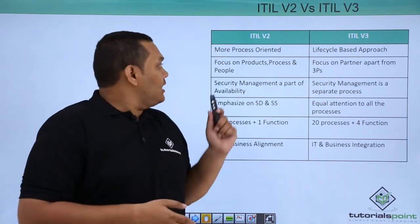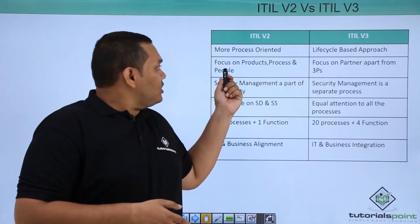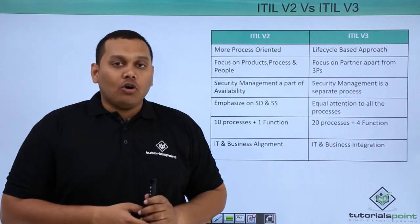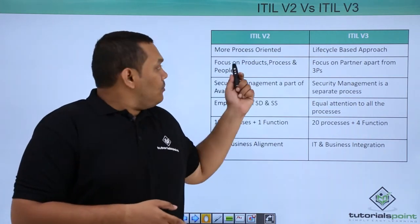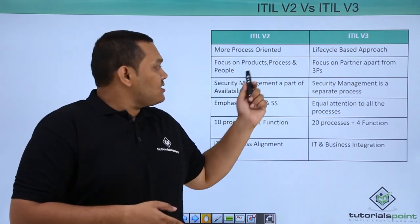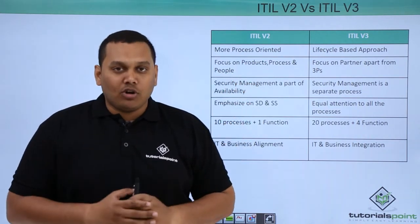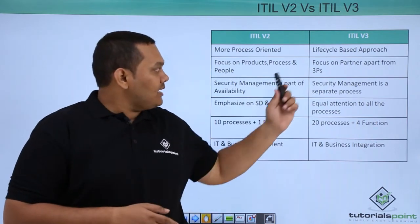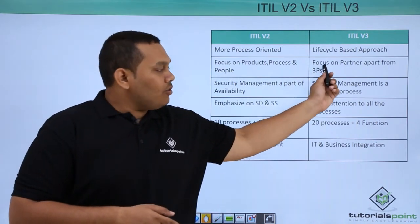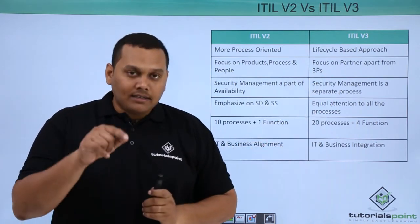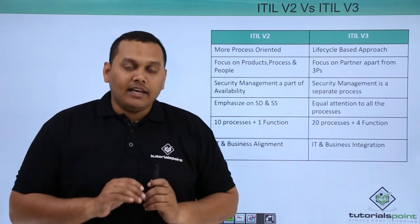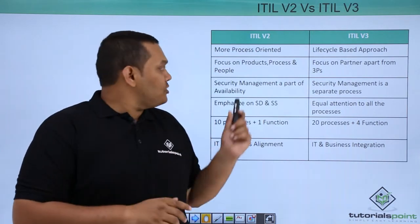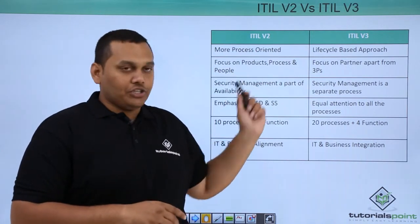Version 2 focused on products, processes, and people — the three P's in the IT industry. Version 3, however, focuses on partners as well, in addition to all three P's from version 2.